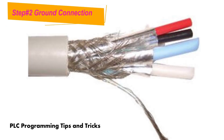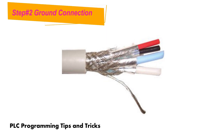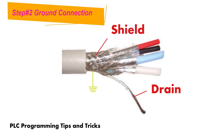Network grounding: the DeviceNet cable must be grounded at only one location. This should be done closest to the center of the network. Connect the network shield and the drain wire to an earth ground using wire up to a maximum of three meters in length.